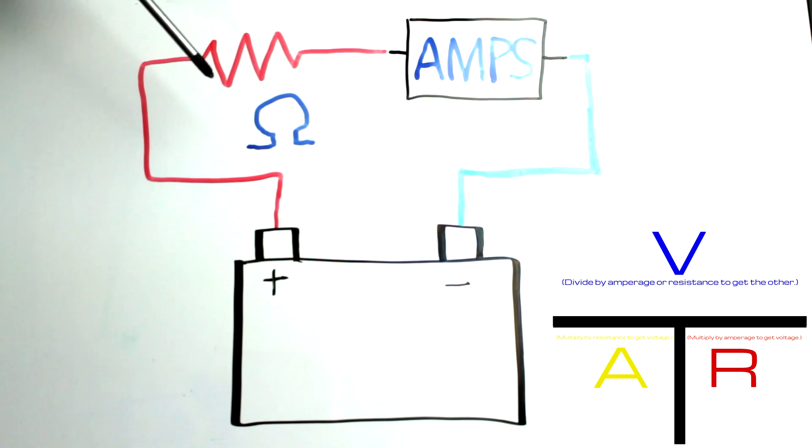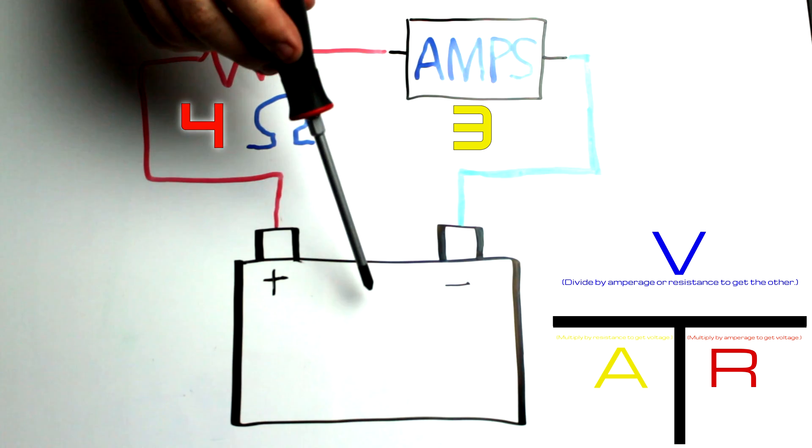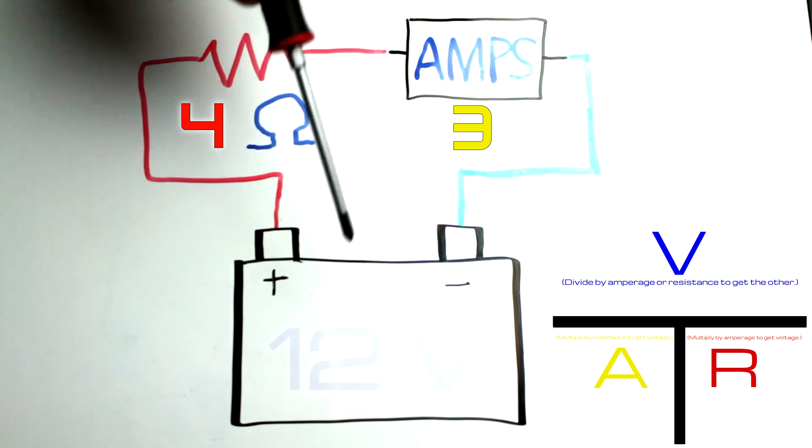How else can we use Ohm's law? Well if you knew your resistance and your amperage you could figure out your voltage. So if you have four ohms and three amps you can multiply these two to get your voltage. Four times three is 12.